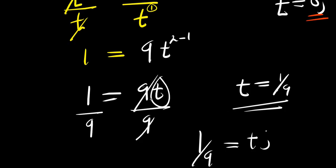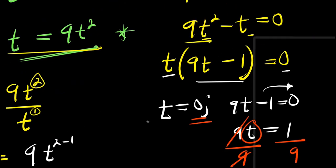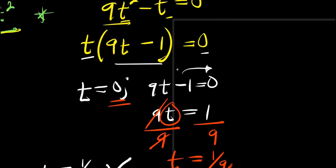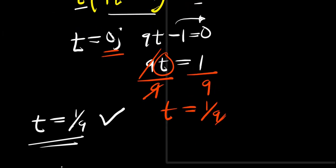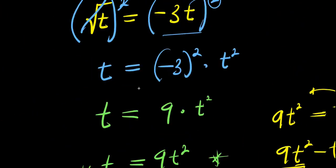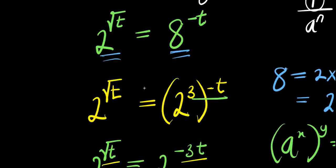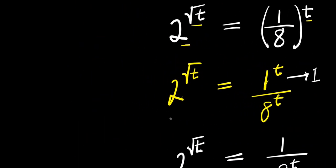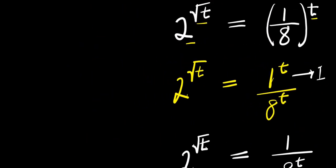This particular approach gives us only one solution, while the other approach gives us two different solutions, which are 0 and 1 over 9. So what we can do is verify each of the solutions that we have gotten.